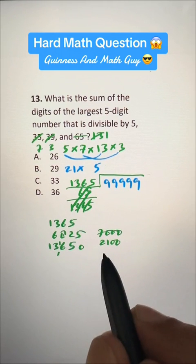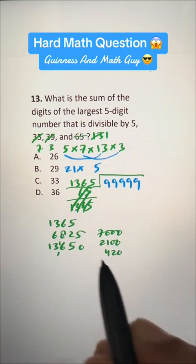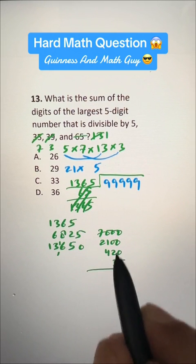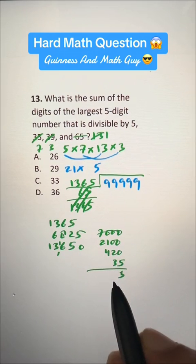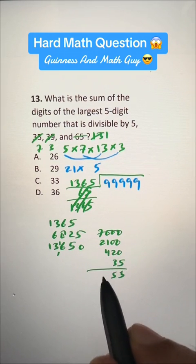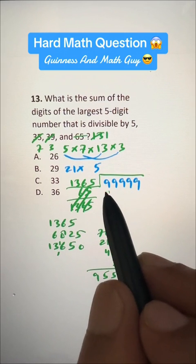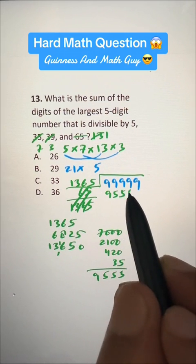7 times 6 is 42, so 420, and 7 times 5 is 35. And now we can add them, this is 5, 3 plus 2 is 5, 4 plus 1 is 5, and 7 plus 2 is 9. So, we have 9555 here,